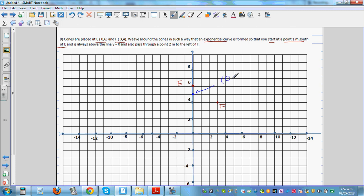This is E and you're starting at 1 meter south of E, so the coordinate of this point is 0 comma 5, and always above the line y equals 0. Which line is called y equals 0? Well, the x-axis is called y equals 0, so you want to move in an exponential curve, meaning you're above this x-axis.